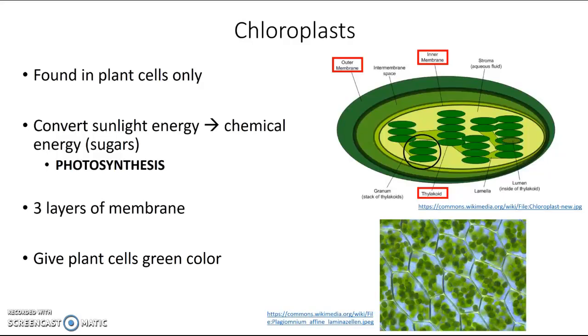Chloroplasts are actually green. If you look at plant cells under the microscope, such as these cells here, you'll see these little green blobs inside, and each one of those is an individual chloroplast.